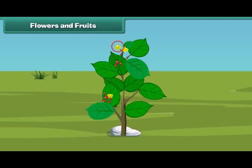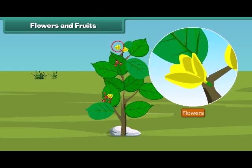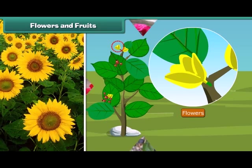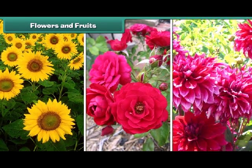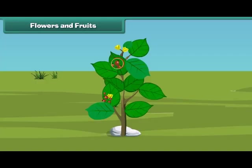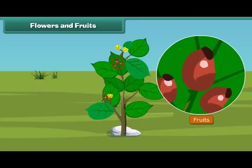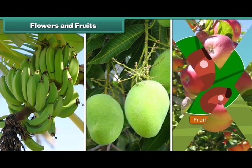Now let us know about the most attractive and beautiful part of the plant. Yes, that is the flower. Flowers are of different colors and types, like sunflower, rose, and dahlia. I know that most of you also like fruits. Fruit is the juicy part of the plant and comes in different shapes, sizes, and colors, like banana, mango, apple, and oranges.